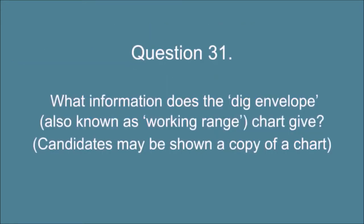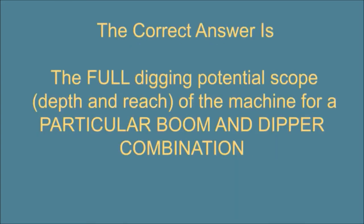Question 31. What information does the dig envelope, also known as working range chart give? Candidates may be shown a copy of a chart. The correct answer is, the full digging potential scope, depth and reach, of the machine for a particular boom and dipper combination.